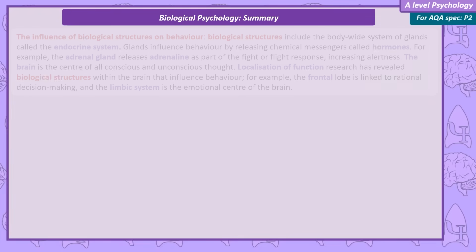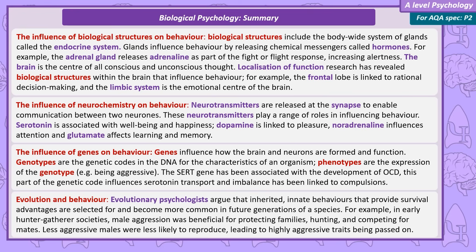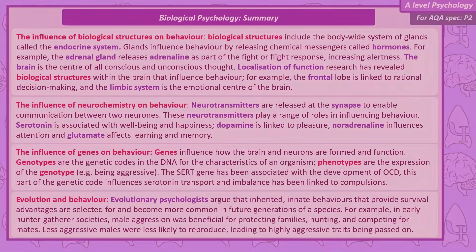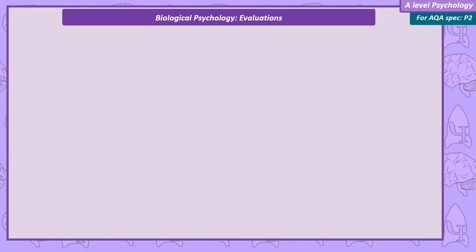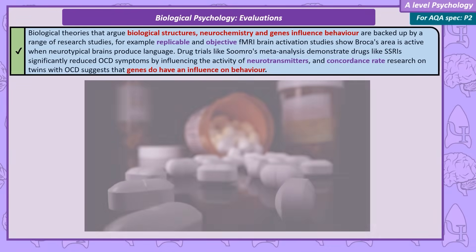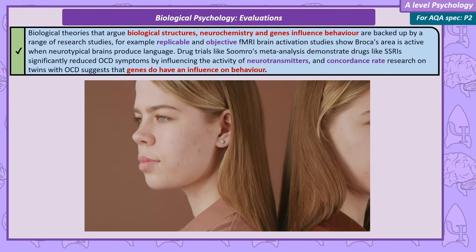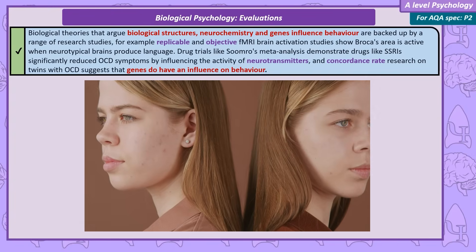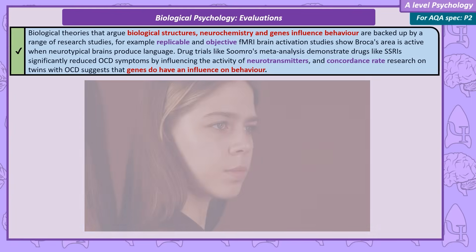We've covered the biological approach in detail, and I hope that helped you understand the concepts, not just remember them. But if you were to write an essay on the biological approach, you wouldn't need that level of detail. Evaluating the biological approach: we can use any of the research studies mentioned so far as evaluations — the Soomro meta-analysis on OCD, the case study of TAN, and the family and twin studies for genetics. These provide research evidence that demonstrates the assumptions of the biological approach.